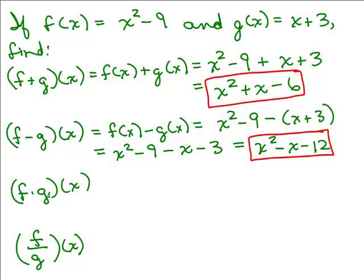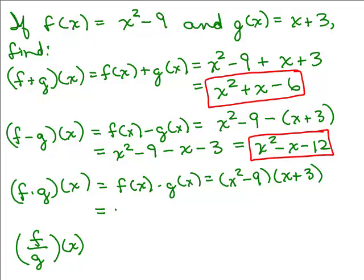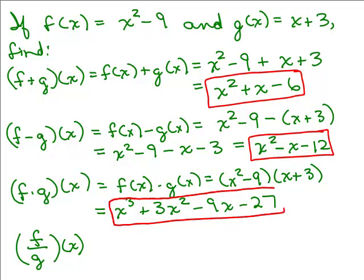f times g of x, that means f(x) times g(x). So that means x² - 9 times x + 3. Well, this is the product of two binomials, so we can do the FOIL method. First, x² times x is x³. The outer, x² times 3 is plus 3x². The inner, -9 times x is -9x. And the last, -9 times 3, is -27. And that's as simplified as we can go because there are no like terms.